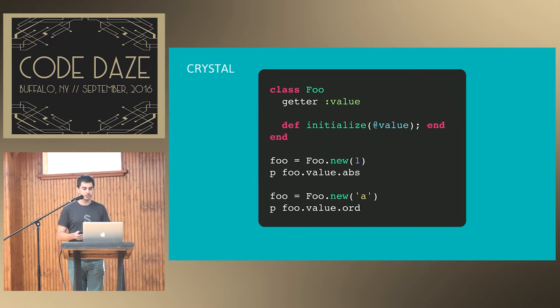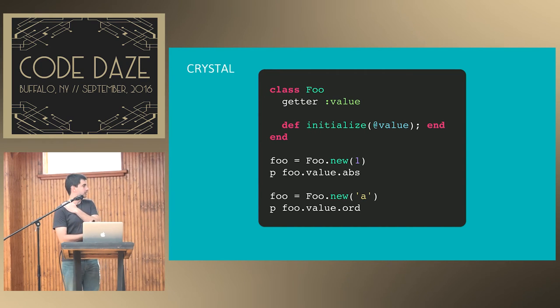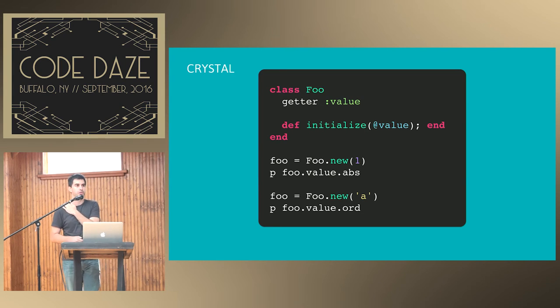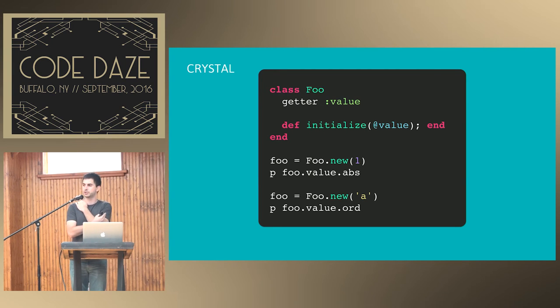In Crystal it's a little different. If I do the same thing — just changing attr_reader to getter, which is what Crystal calls it (they have getter, setter, and property) — and I try to instantiate it with an integer and then a character, it's going to break. Crystal cannot infer the type of the variable value of Foo.